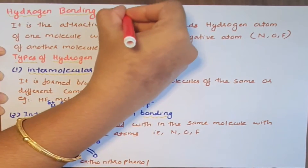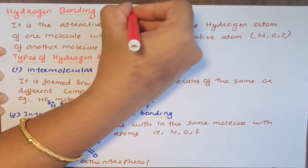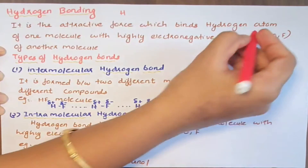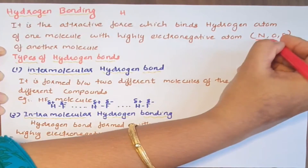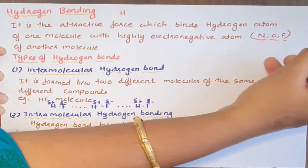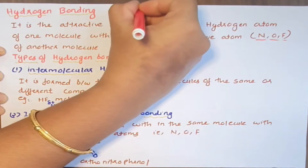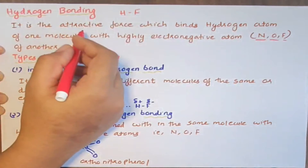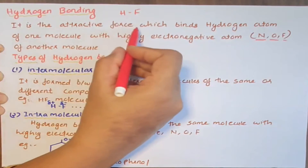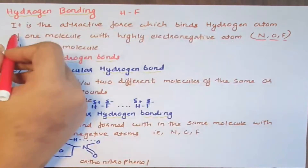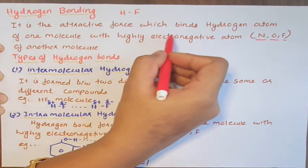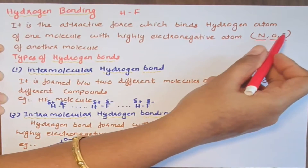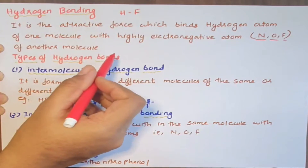Hydrogen is bonded to a highly electronegative atom. For example, Nitrogen, Oxygen, or Fluorine — such as in HF. Hydrogen bonding is the attractive force which binds the Hydrogen atom of one molecule with a highly electronegative atom, that is Nitrogen, Oxygen, and Fluorine, of another molecule.